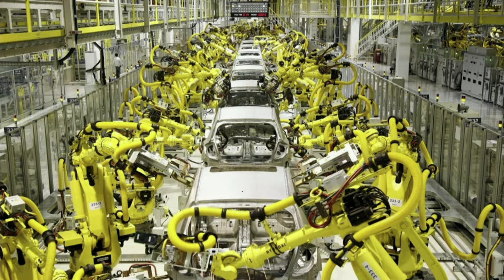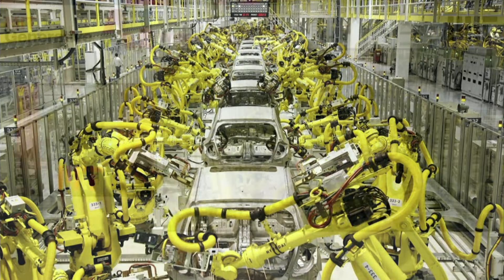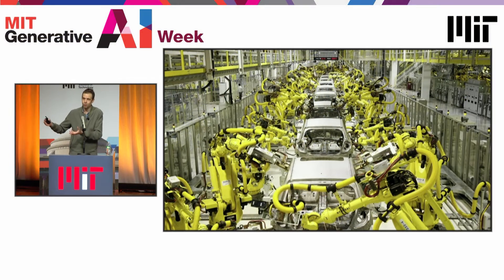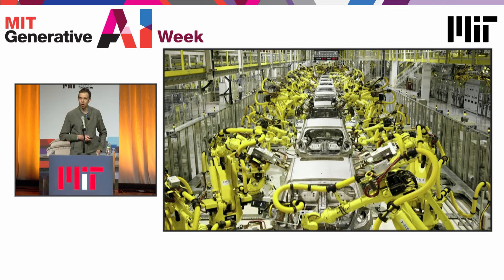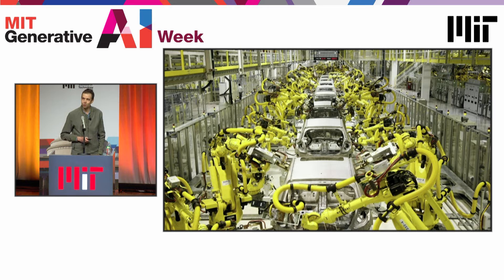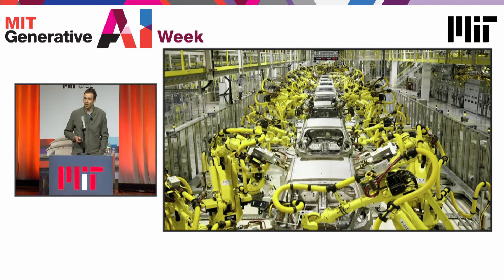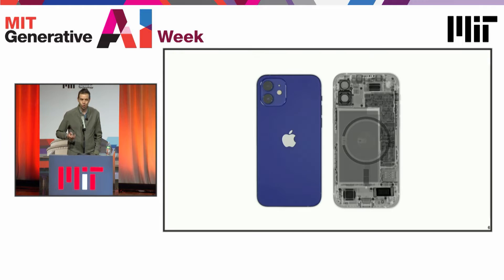We see more automation in any manufacturing facility from small to large. For instance, the front end of most automobile plants are largely roboticized, largely automated. And along the way, through the latter part of this 100 years, we've also built the semiconductor industry and consumer electronics.